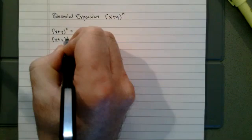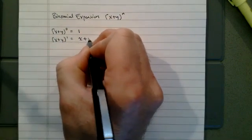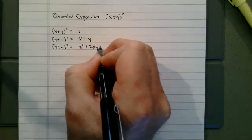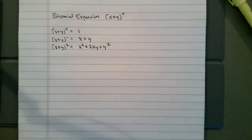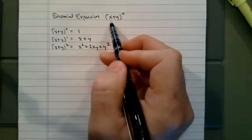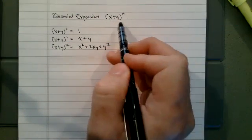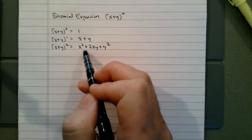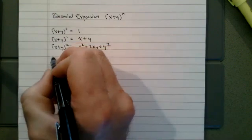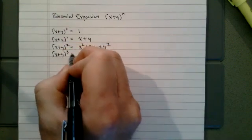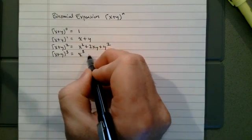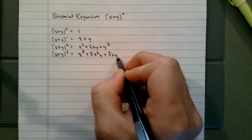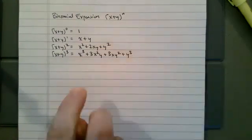If we have x plus y to the zero power, that gives us 1. x plus y to the first power is just x plus y. x plus y squared is x squared plus 2xy plus y squared. The pattern to notice is that the first term's exponent counts down while the second term's exponent counts up. When we get to x plus y to the third power, it starts with x cubed, then 3x²y, then 3xy², then y cubed. The x's count down: 3, 2, 1, 0; the y's count up: 0, 1, 2, 3.